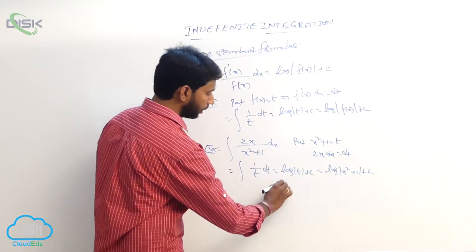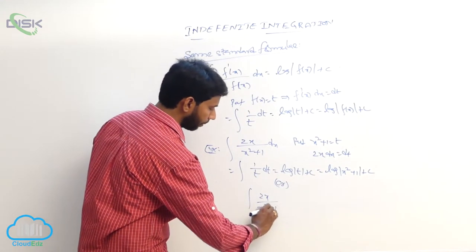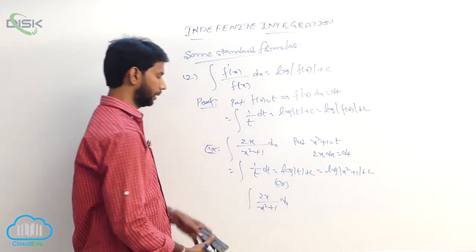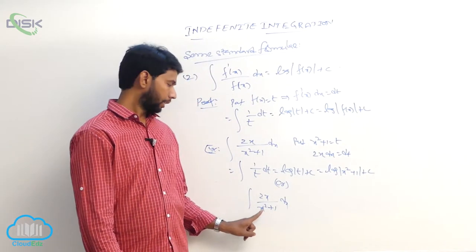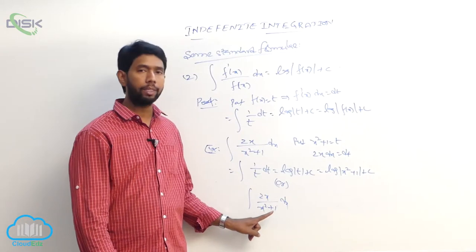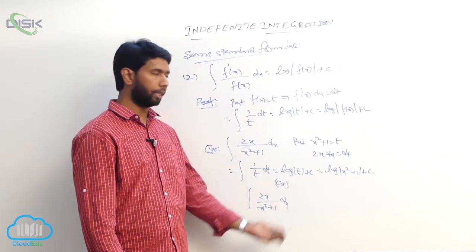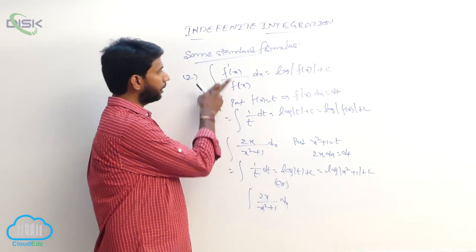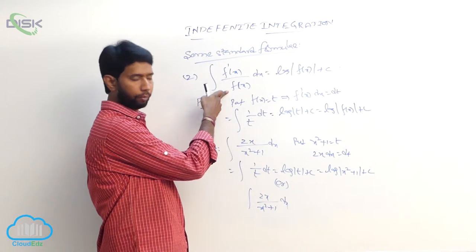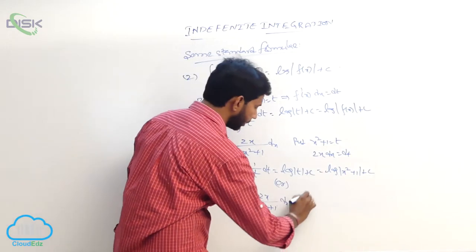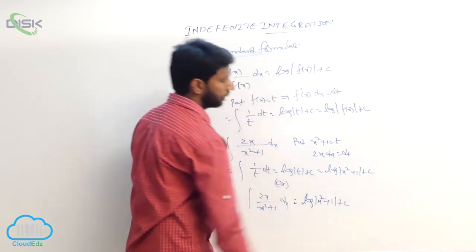Or simply using the formula: consider f(x) equal to x² + 1, then its derivative is 2x dx, which is the numerator. This is of the form integral of f'(x)/f(x), giving log|f(x)|, i.e., log|x² + 1| plus constant.